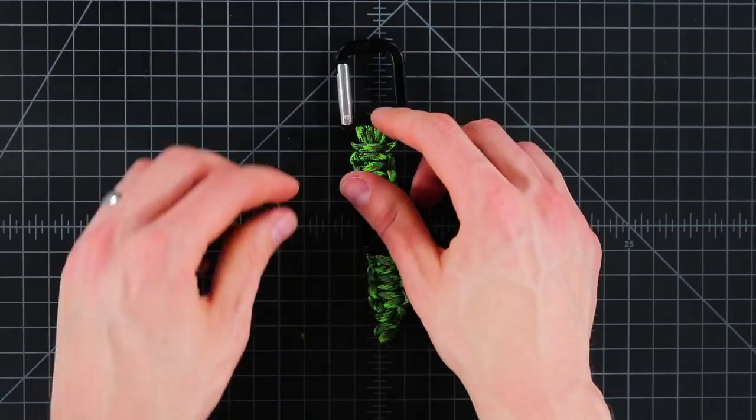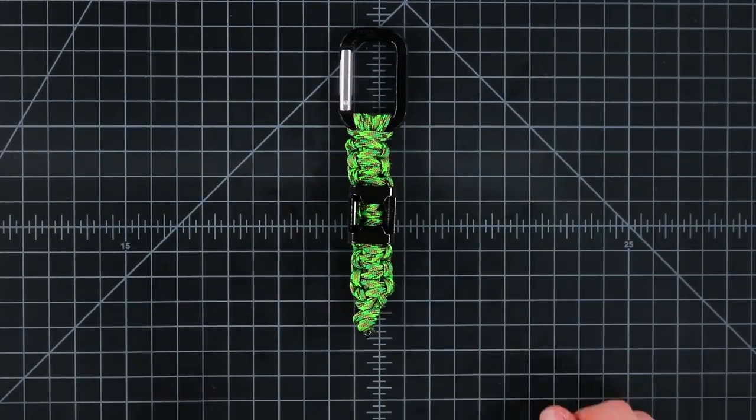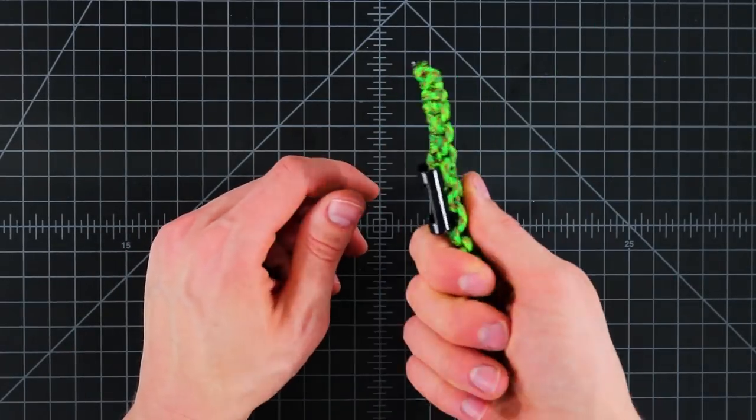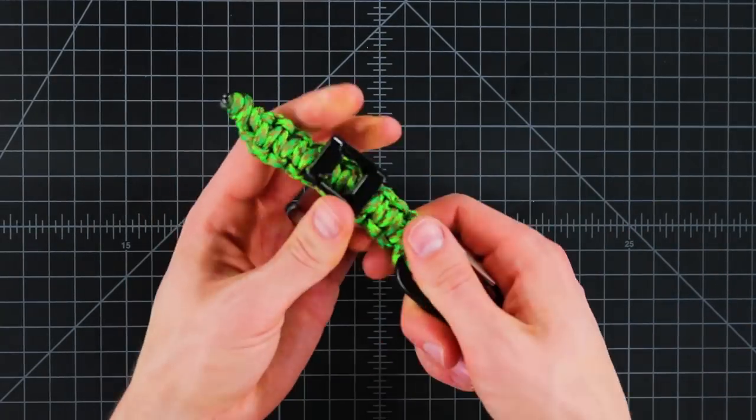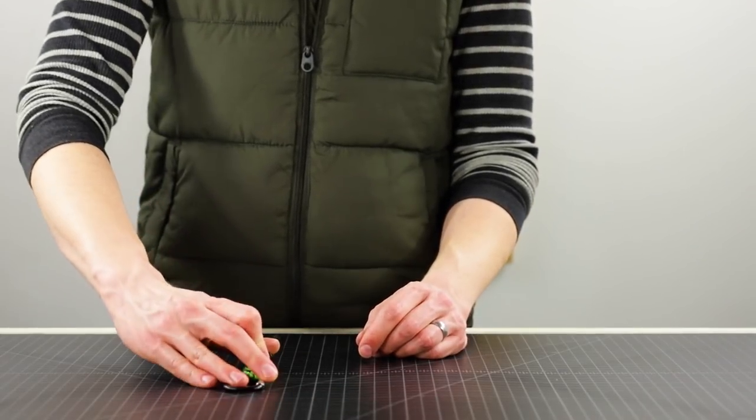So there's our keychain. To use it, just grab onto the end of the handle, hook it under your bottle cap. A handy way to have a bottle opener with you wherever you go.